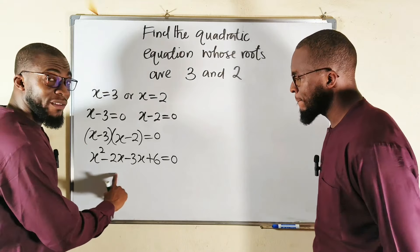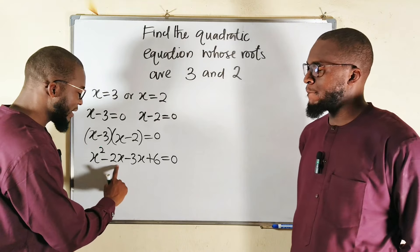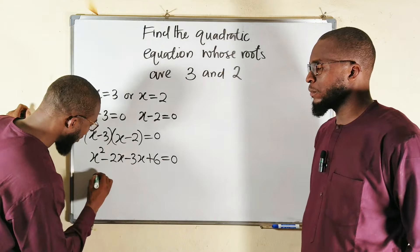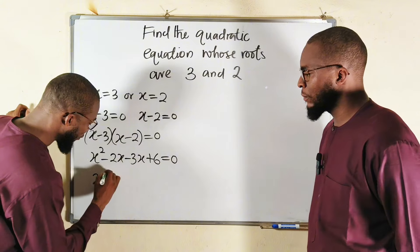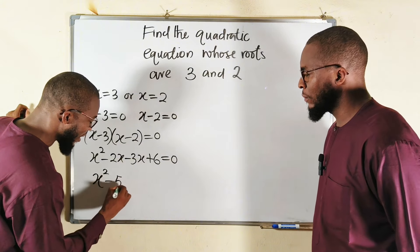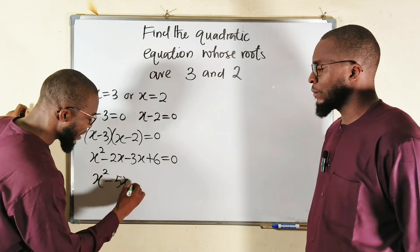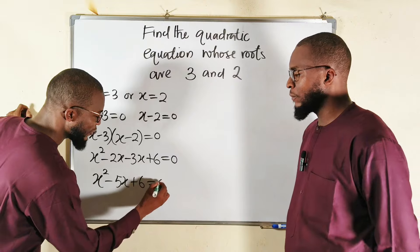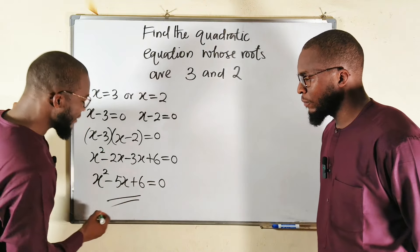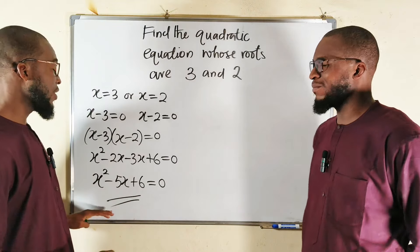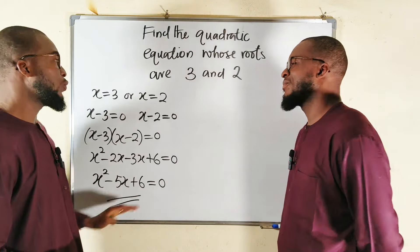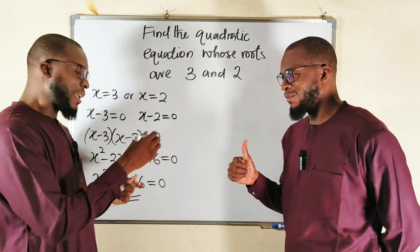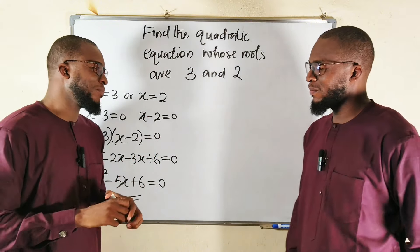And this is equal to 0. The middle terms are like terms: negative 2 and negative 3 is negative 5. Finally, our quadratic equation is x squared minus 5x plus 6, and this is equal to 0. Hence, this is the quadratic equation whose roots are 3 and 2. Let's see how my brother will solve the same problem.